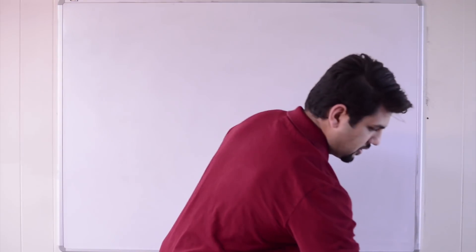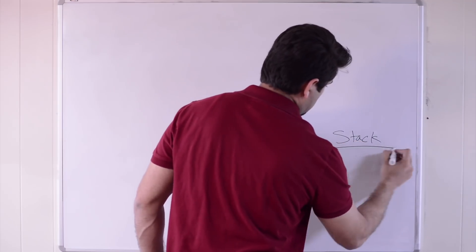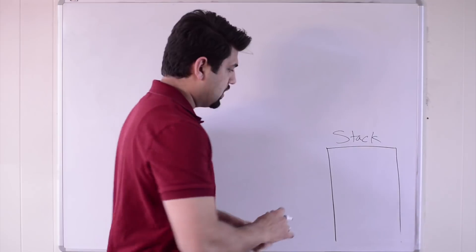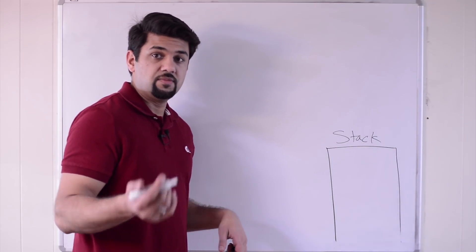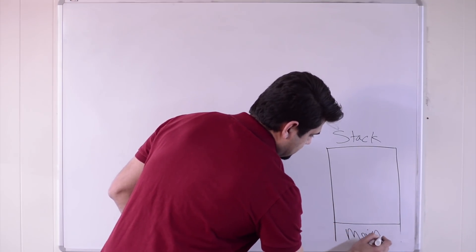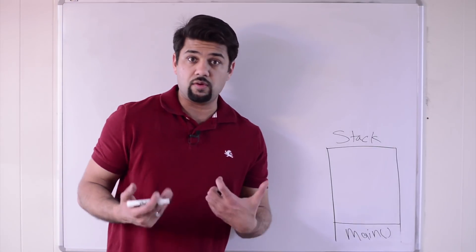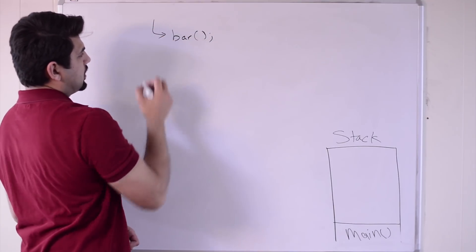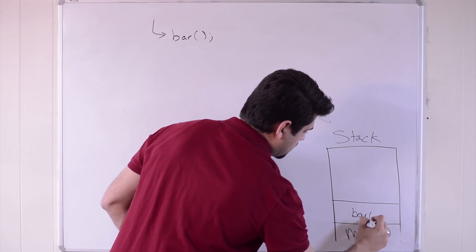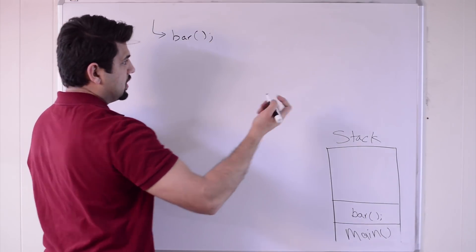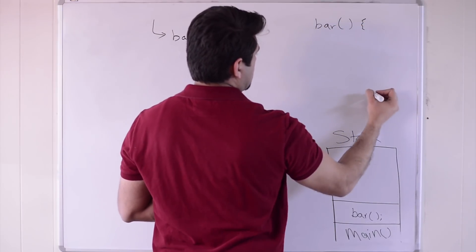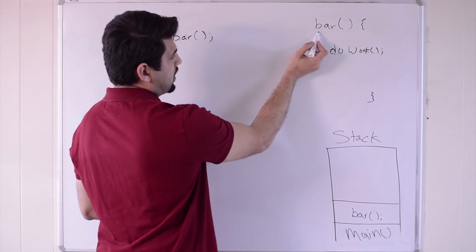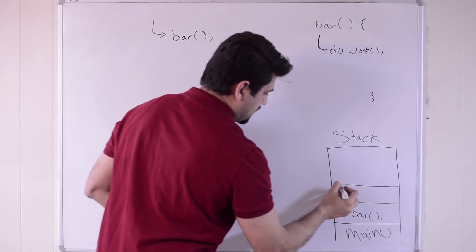A stack is a memory area reserved to maintain method invocations. When your application starts up, the first method invoked is the main method, so that gets added to the stack — that's the starting point of every Java application. Here in main, I can invoke some method called bar. When the interpreter gets there, it adds bar to the stack. In the body of bar, let's say it invokes some method called doWork. When the interpreter gets there, it invokes doWork as well and adds it to the stack.